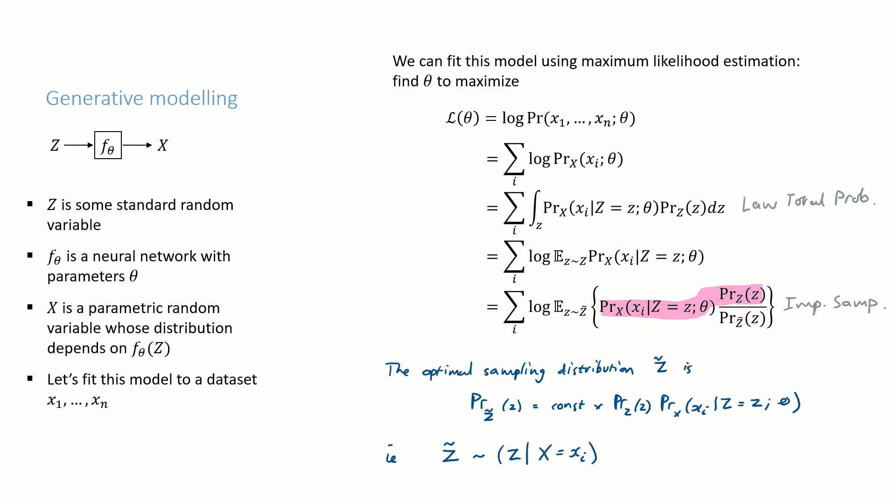We probably won't be able to achieve this exact, perfect sampling distribution, but that's okay, because the importance sampling method works for any Z̃. But we do want to at least try to get close to it. At the very least, we'd absolutely like Z̃ to be chosen based on Xᵢ.